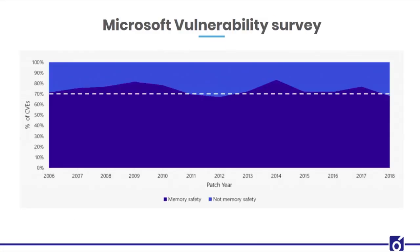To understand the importance of memory safety features of Rust, we can look at the Microsoft vulnerability survey report. This is a survey on vulnerabilities that occurred in Microsoft applications from 2006 to 2018, in which we can see that about 70% of vulnerabilities are because of memory safety issues. Rust will help us decrease the major vulnerabilities from applications.